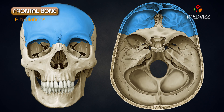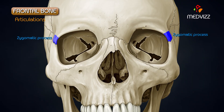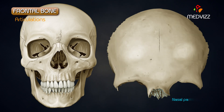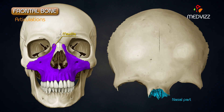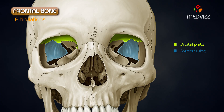Articulations. The frontal bone articulates posteriorly with the right and left parietal bones and with the greater wing of the sphenoid. Through its zygomatic process, it articulates with the zygomatic bone. The nasal part articulates with the nasal bones and with the frontal processes of the maxillae. The nasal spine meets the perpendicular plate of the ethmoid bone. The orbital parts articulate with the greater and lesser wings of the sphenoid, with the orbital plate of the ethmoid bone and with the lacrimal bone of the corresponding side.